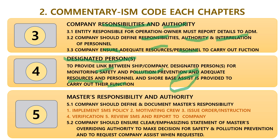Chapter 5: Master's Responsibility and Authority. 5.1: The company should define and document the master's responsibility, which includes: 1) Implement SMS policy; 2) Motivate crew; 3) Issue orders and instructions; 4) Verification; 5) Review SMS and report to the company. 5.2: The company should ensure a clear overriding authority statement for the master — to make decisions for safety and pollution prevention and to request company assistance when needed.